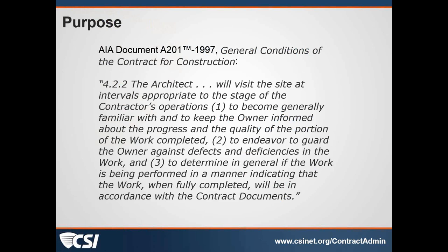It's to report the progress of the work and the quality of the work, to report any observed deficiencies, and to assess conformance with the contract documents. When you are writing your field observation report, keep those three things in mind and make sure your report addresses those items. The purpose is to become generally familiar with the work. We're not required to know everything that's going on. We are required to report deficiencies that we observe, to keep the owner informed, and to protect the owner. The audience for the field observation report is primarily the owner.